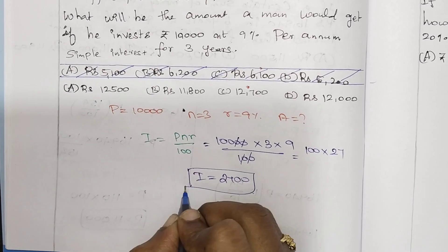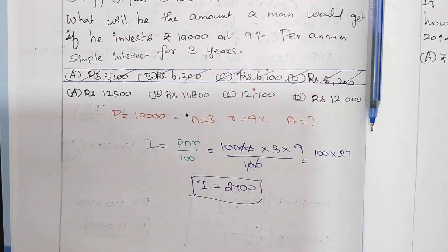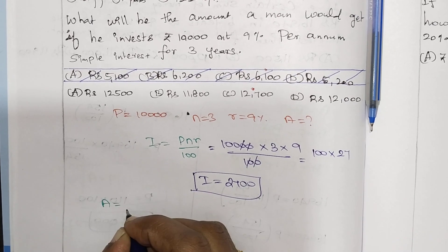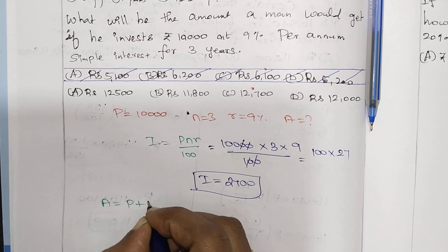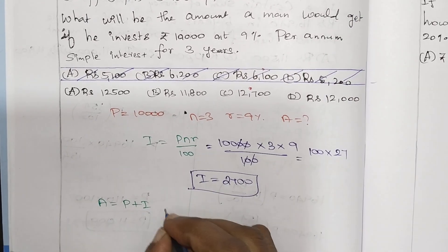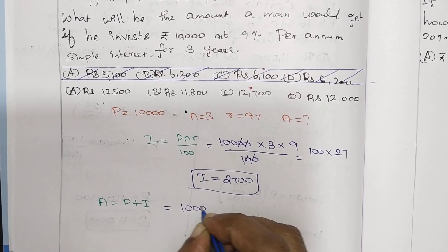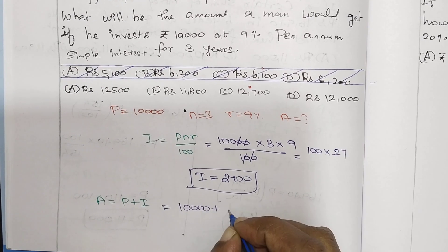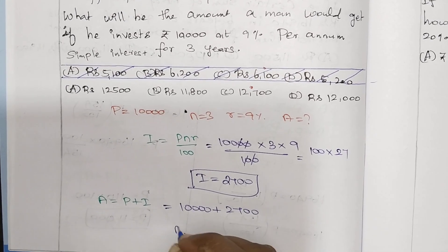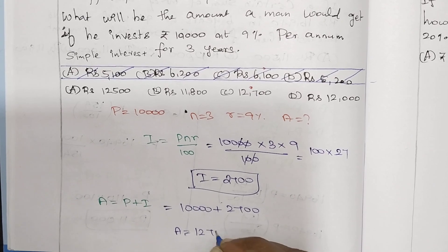The interest comes out to a value we call I. Then A is equal to P plus I. That gives us A equal to the calculated sum.